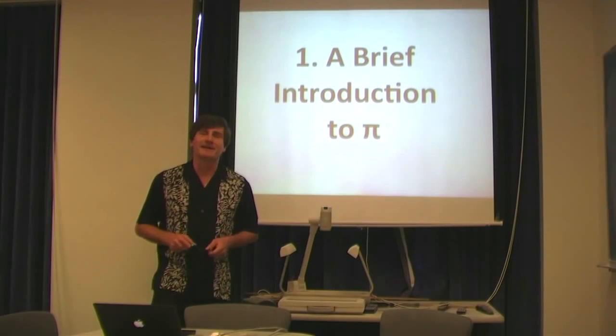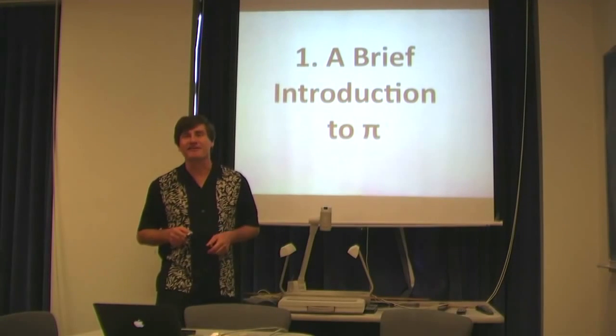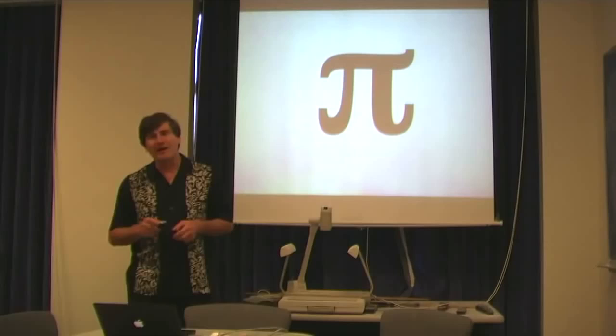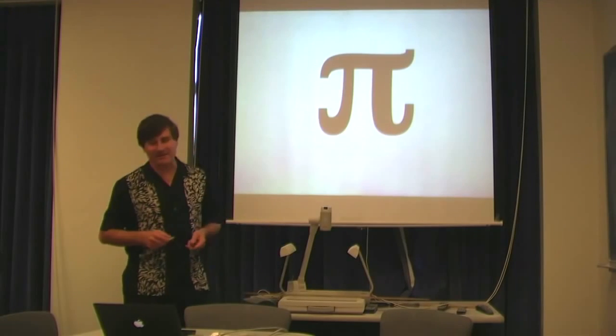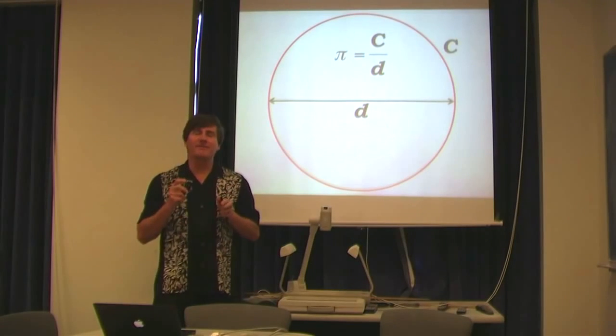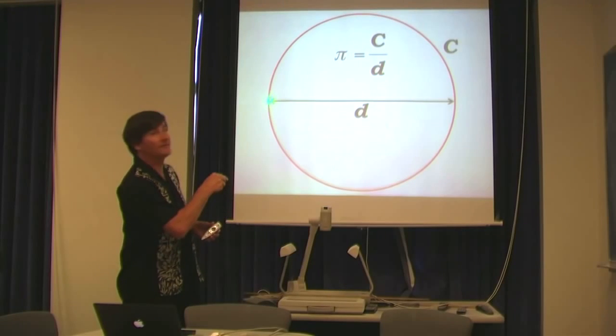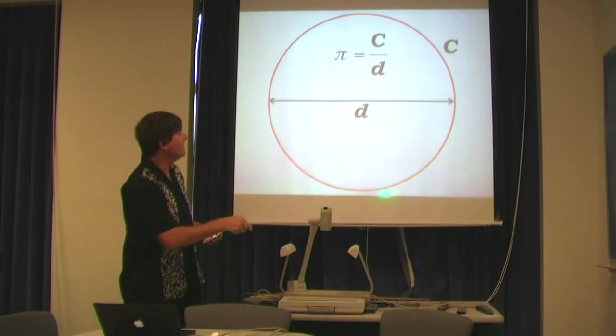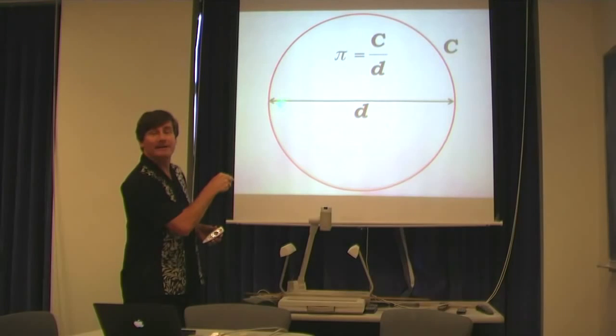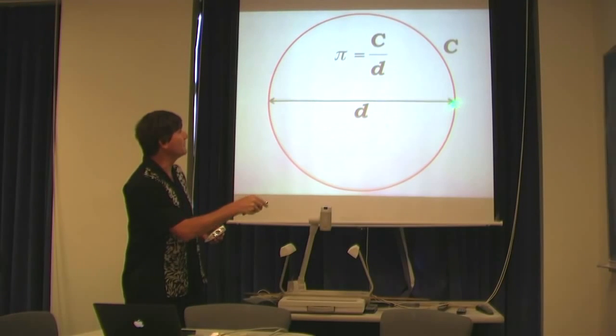Hi, my name is Alex Filippenko, and I'd like to give you a brief introduction to pi. Now, pi, whose symbol is given here, is the number that you get when you take the circumference of a circle, that is, all the way around, and divide it by its diameter, that is, the distance all the way across.